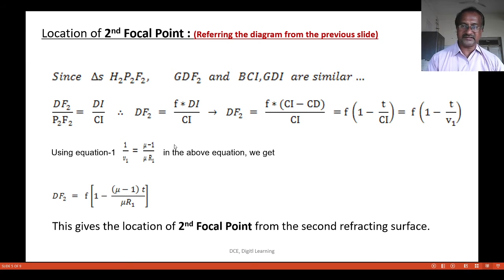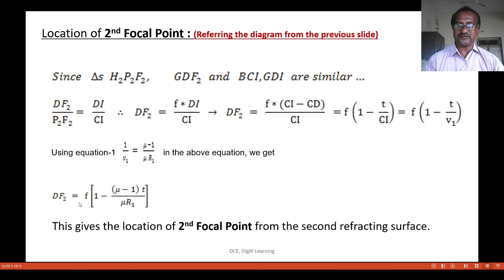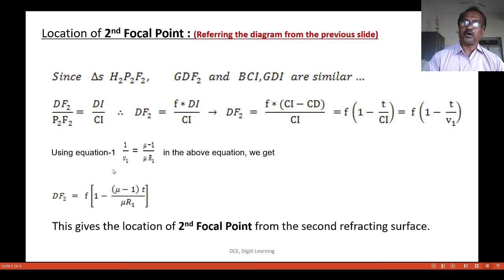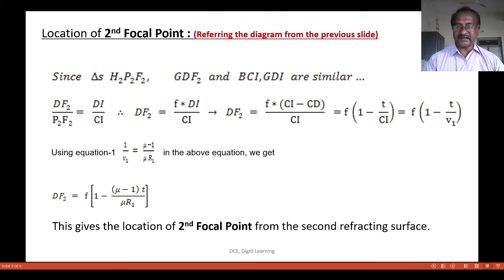Substituting 1/v1 equals (mu minus 1) divided by (mu times r1) into this equation, we get df2 equal to f times [1 minus (mu minus 1) times t divided by (mu times r1)]. This gives the location of the second focal point from the second refracting surface.